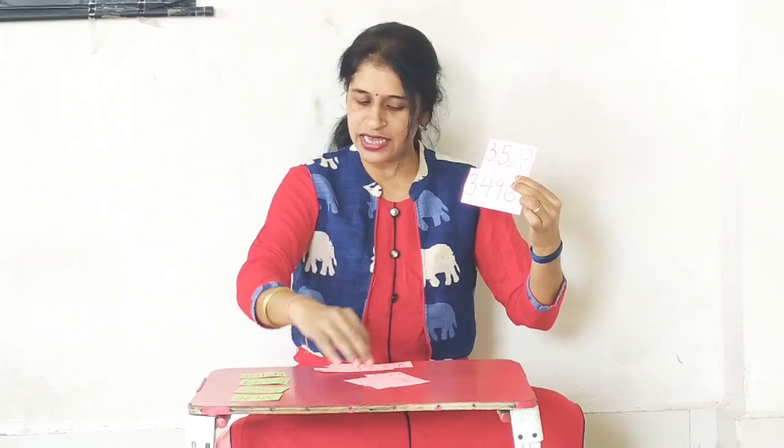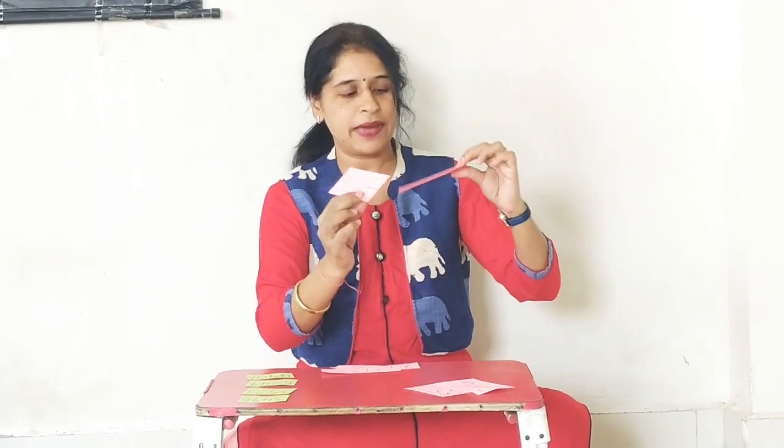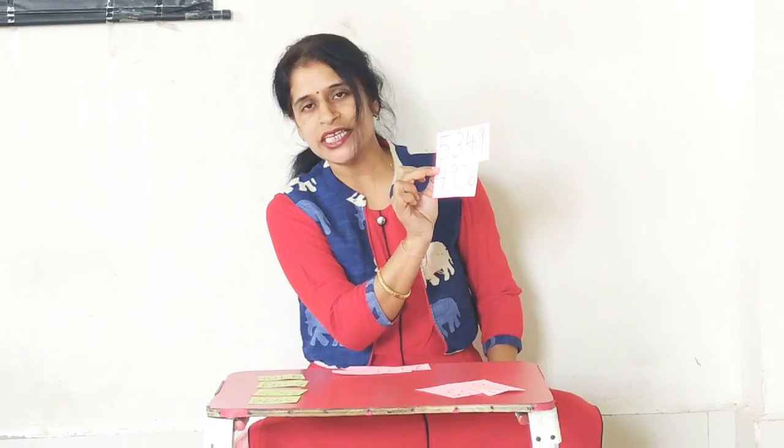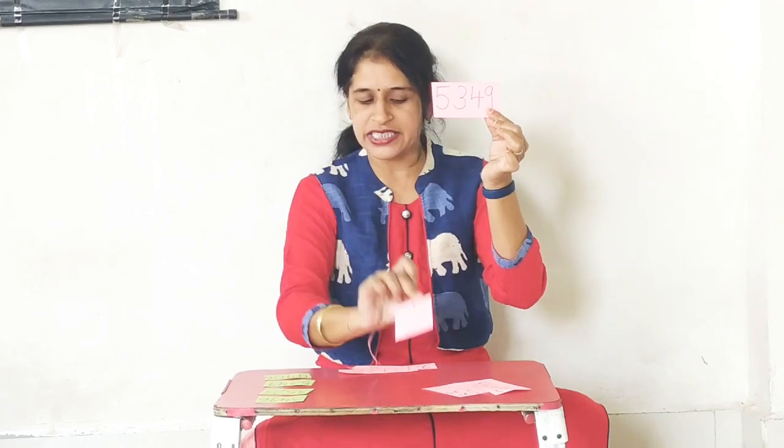Is it clear? Now for the remaining two numbers — 5349 and 4906. In the thousands place, one digit is 5 and one is 4. Which is smaller? 4 is smaller than 5, so 4906 will come next and 5349 is the biggest — it comes last.